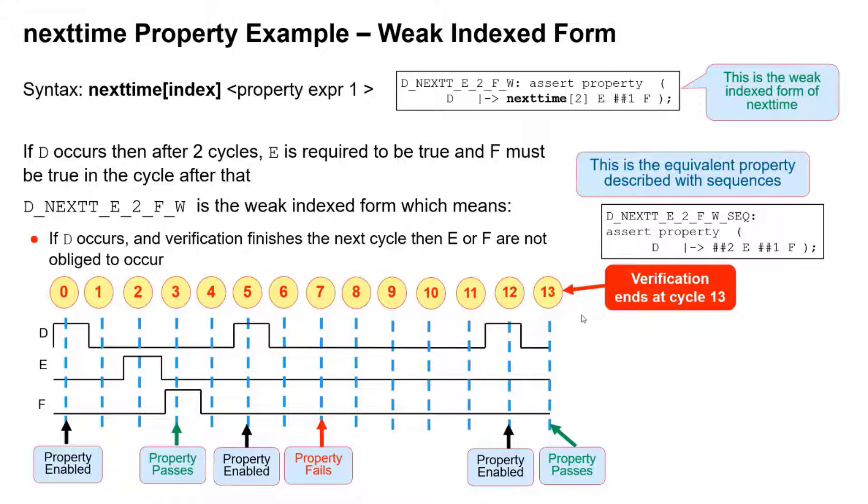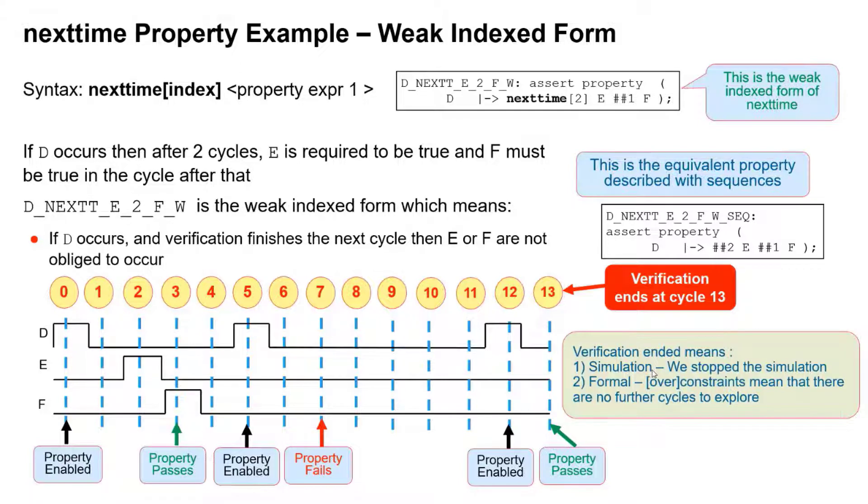So you might ask yourself, why does verification end then? Well, two reasons. If it's a simulation, we stop the simulation. If it's formal, it might be that constraints or unintentional over-constraints mean that there is no further cycles to explore, but this will not be shown as a failure. So that's the weak form. That's a weak indexed form.